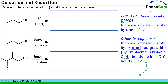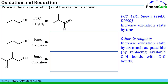The first example uses PCC. Only the carbon bearing the OH group will react and change its oxidation state. PCC can only increase the oxidation state by one unit, so we take off one of the two hydrogens on that carbon and replace it with a new bond to oxygen. Instead of one bond to oxygen, we now have two — an increase in oxidation state by one unit.